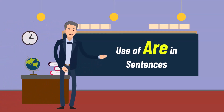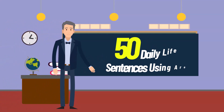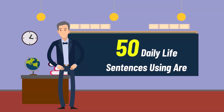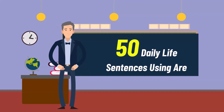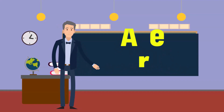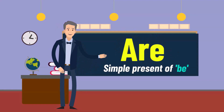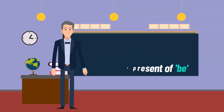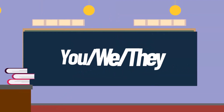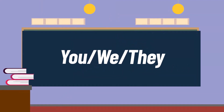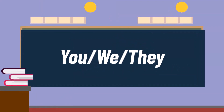Use of ARE in sentences. 50 daily life sentences using ARE. Simple present of BE, used with you, we, they.